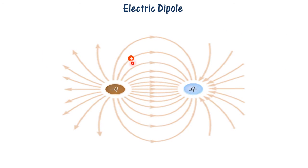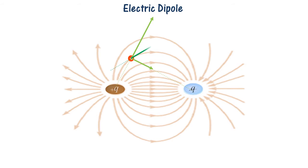We consider a unit positive charge along the electric field line. Since plus Q and this unit positive charge will repel each other, the direction of the force on the unit positive charge is outward, and minus Q will attract this unit positive charge — that is the direction of that force. Since this is a unit positive charge, these directions are the directions of the electric field. The electric field from plus Q is larger because plus Q is closer to this unit positive charge compared to minus Q. We find the resultant electric field by adding the two vectors together, and the direction of the electric field is tangent to the electrical field line.